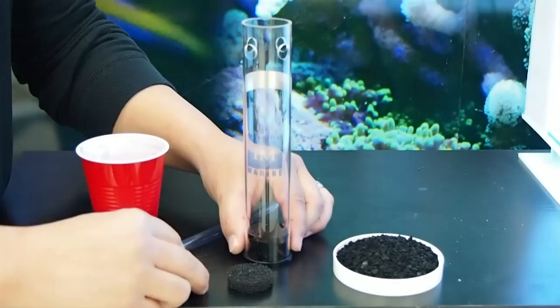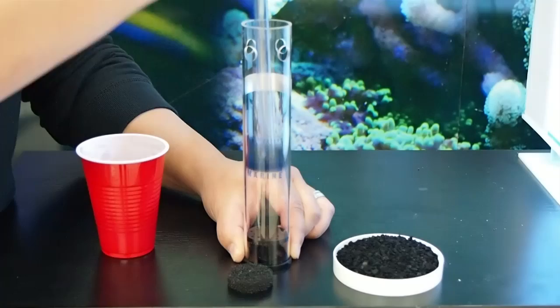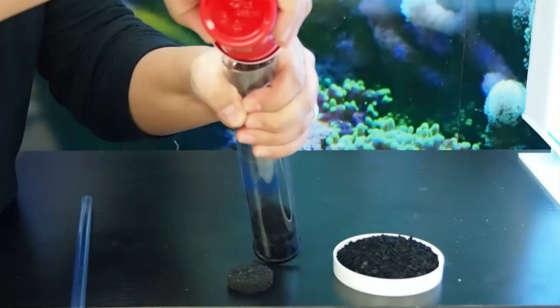You'll take one of the supplied sponges, place it in the inner chamber, and push it to the bottom of the tube. Next, you'll pour in the recommended manufacturer amount of carbon. Take an additional sponge and sandwich it on top.